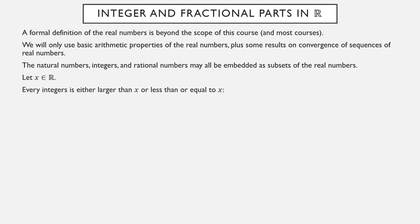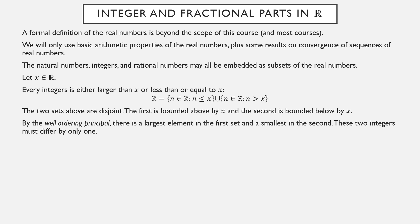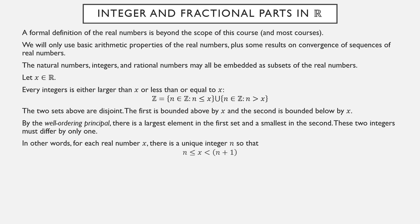Suppose you have a real number x. Every integer is either larger than x or less than or equal to it, so the integers can be split into those two disjoint sets. By the well-ordering principle, there is a largest integer less than or equal to x and a smallest integer bigger than it, and they differ by exactly one. For any real number x, there is a unique integer n such that n ≤ x < n+1. We call that the integer part of x, denoted with square brackets. It's also called the floor of x; the floor notation tends to be used more in computer science, while the integer part is legacy notation in number theory.